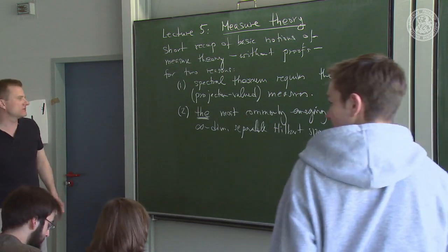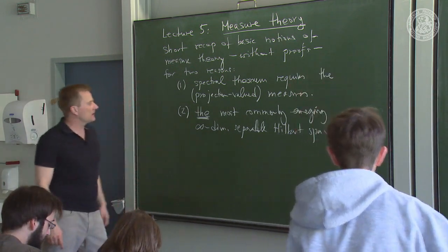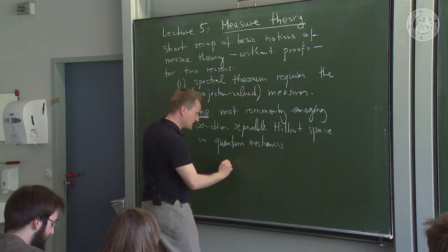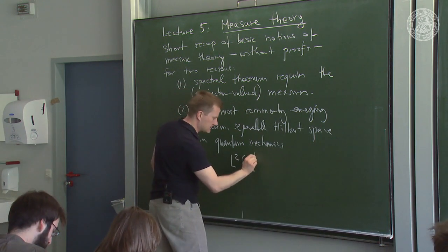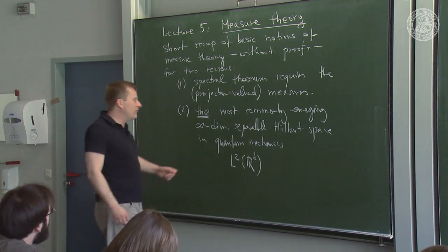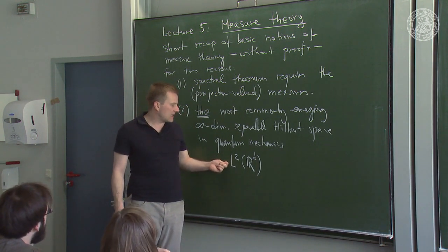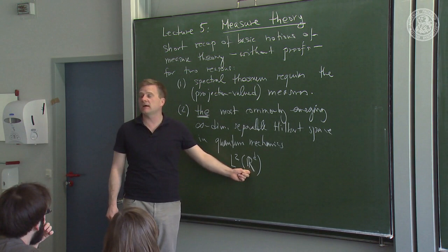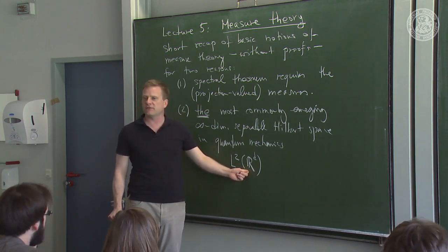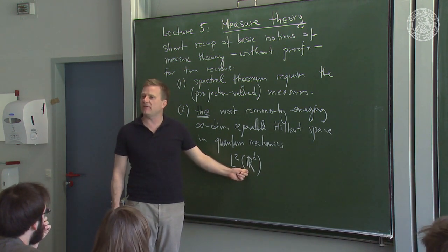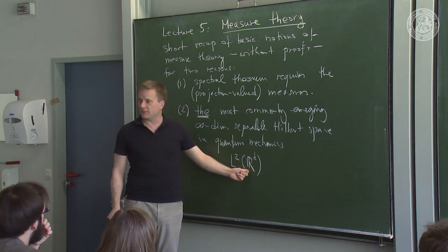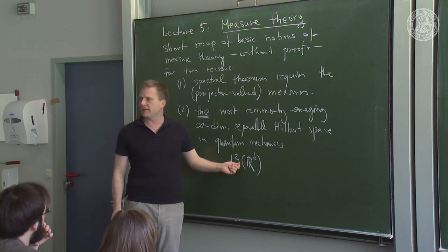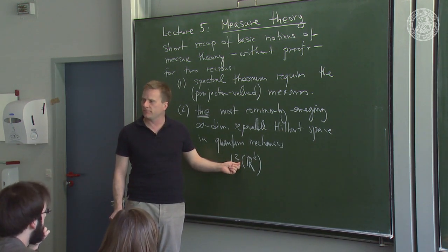The second reason is that the most commonly emerging infinite-dimensional separable Hilbert space in quantum mechanics is the Hilbert space L² on some ℝ^d, often d equals 3. Informally, these are all square-integrable functions on ℝ^d — not quite, because you have to take equivalence classes, since two square-integrable functions that agree almost everywhere are counted as the same element.